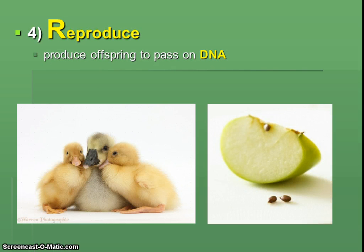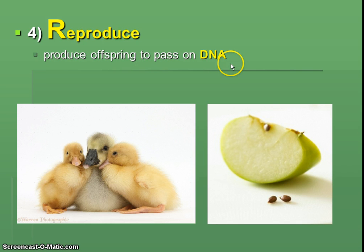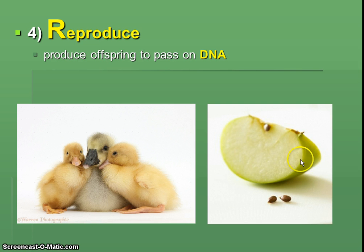The next characteristic is that all living things have to be able to reproduce, and with that process we're putting our DNA — our genetic material — to our offspring. We're going to learn tons about DNA. Offspring means babies. Whether you're an animal, a plant, or a bacteria, somehow there's a way that you're giving your DNA to your offspring.